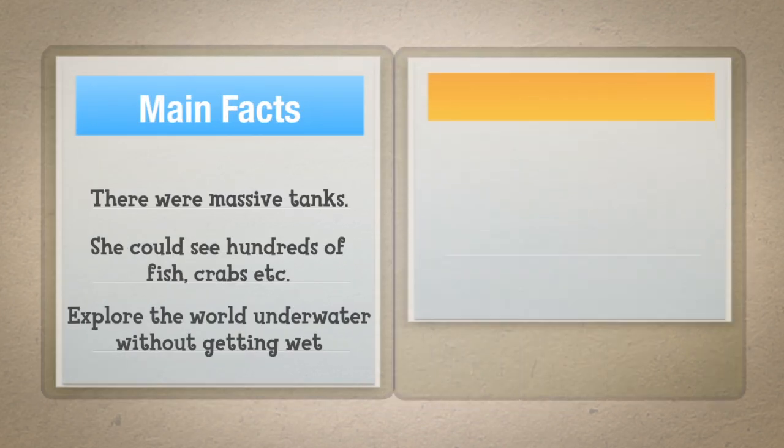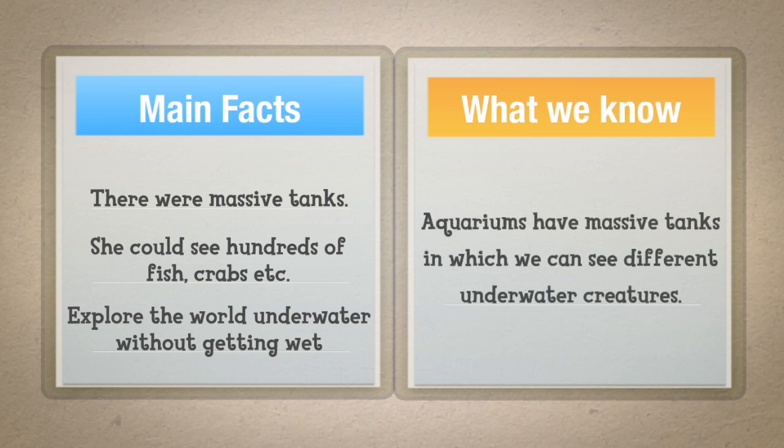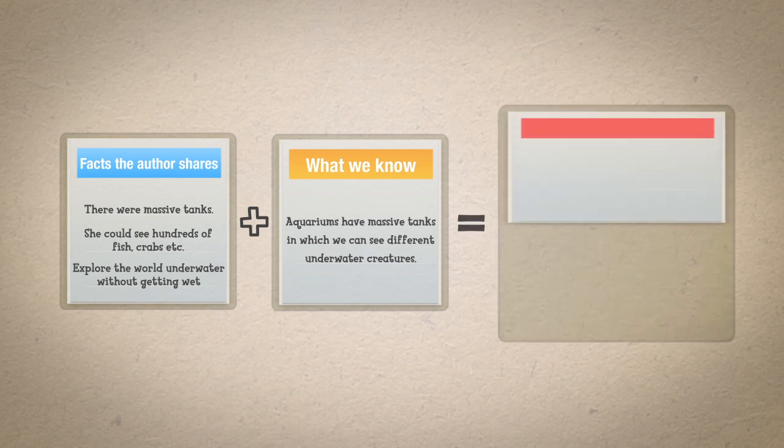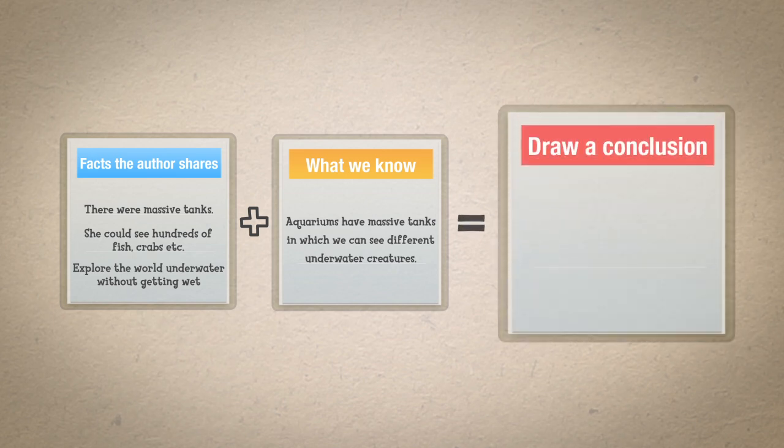What we know? Aquariums have massive tanks in which we can see different underwater creatures. So, first we must take facts that the author shares plus what we already know equals drawing a conclusion. The conclusion we can draw is that Shruti is visiting an aquarium.